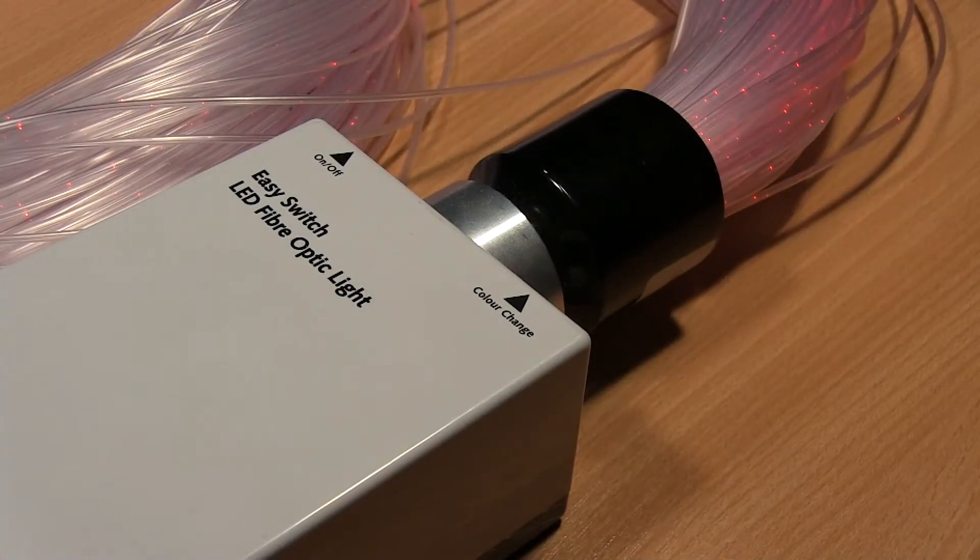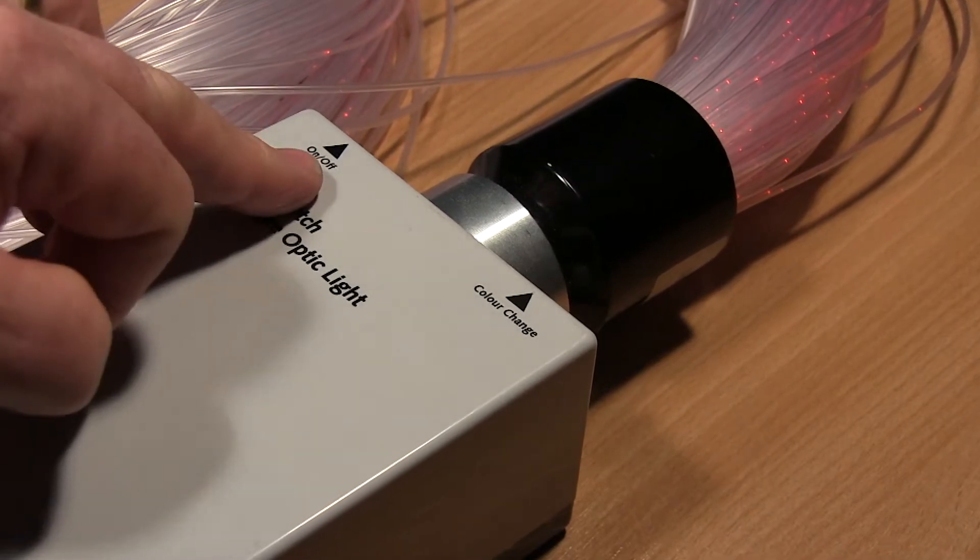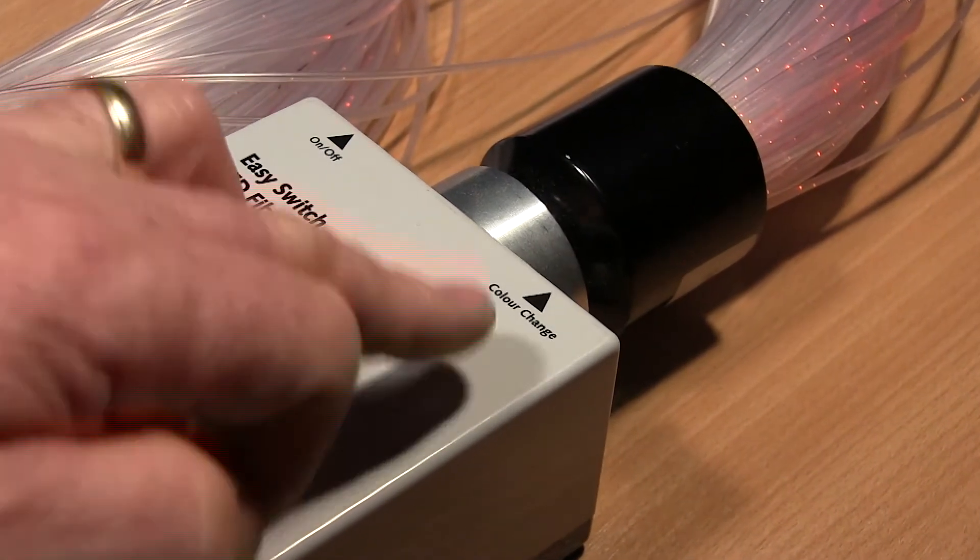If you look at the front of the unit, you'll see there are two labels. One says on/off, and the other says colour change.